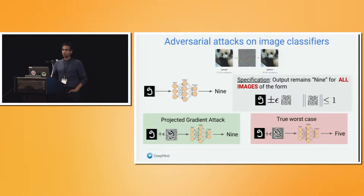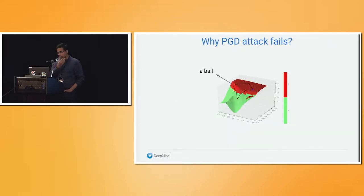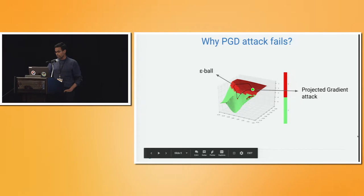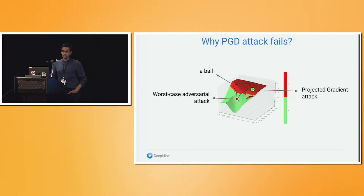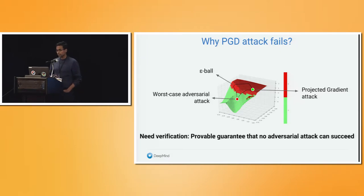We can visualize the loss surface for the adversary trying to maximize confidence in the wrong label. The projected gradient-based attack fails to see a cliff in the loss surface and gets stuck at a local minimum, while an exhaustive search finds the true worst-case example that flips the label from 9 to 5. Neural networks can have complicated optimization landscapes that make it difficult for standard attack algorithms to find counter-examples.